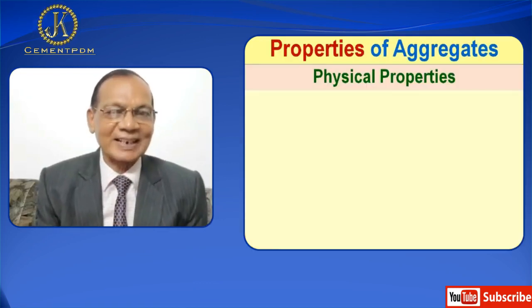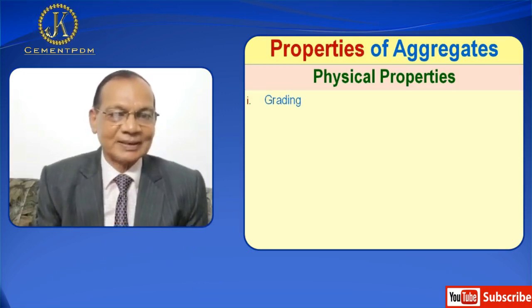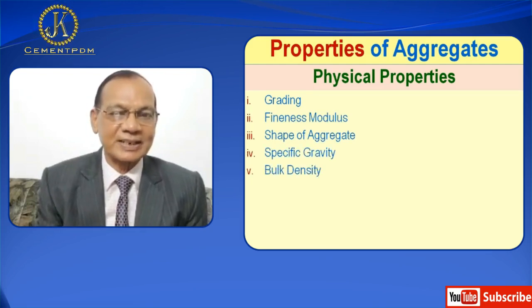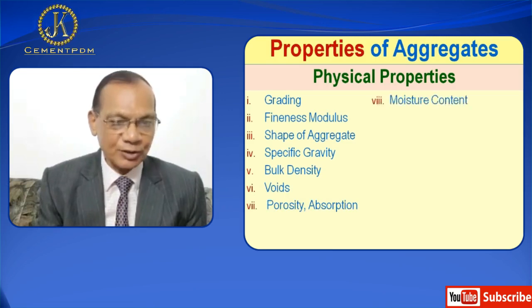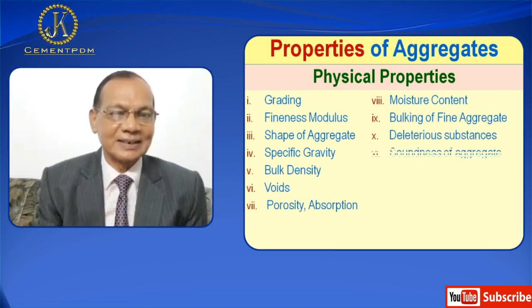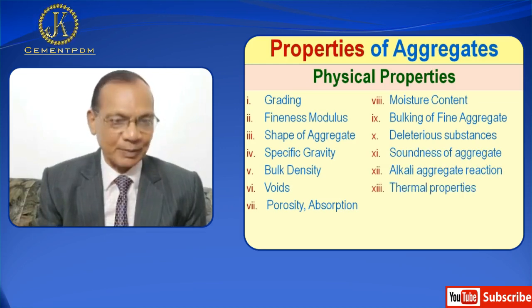The properties of aggregate can be divided into two parts: physical and mechanical properties of aggregate. Physical properties of aggregates are: number one grading, fineness modulus, shape of aggregate, specific gravity, bulk density, voids, porosity and absorption of aggregates, moisture content, bulking of fine aggregates, deleterious substances, soundness of aggregate, alkali aggregate reaction and thermal properties.